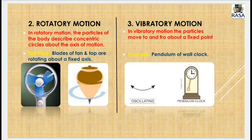Rotatory motion is a motion where the particles of the body describe concentric circles about the axis of rotation. The body is made up of different particles, and each particle, when the body rotates, makes concentric circles about that axis — meaning these circles have a common center. For example, the blades of a fan are in rotatory motion, and a spinning top also rotates about a fixed axis, with its particles making concentric circles.